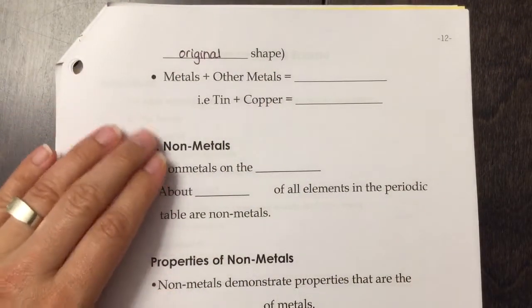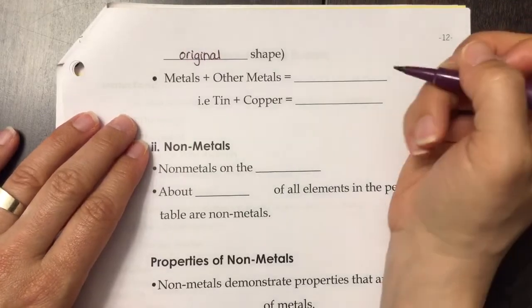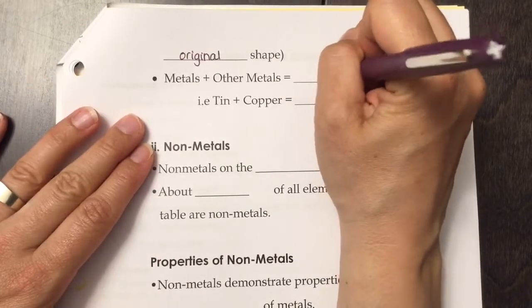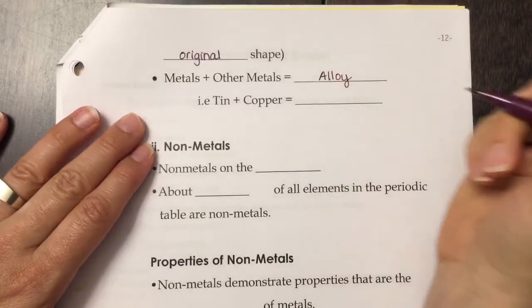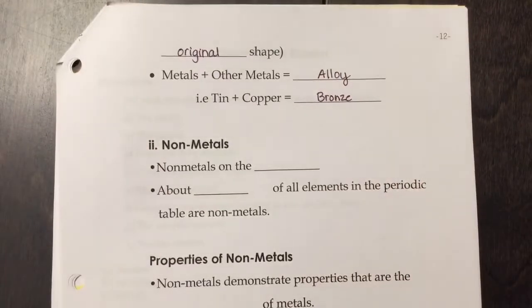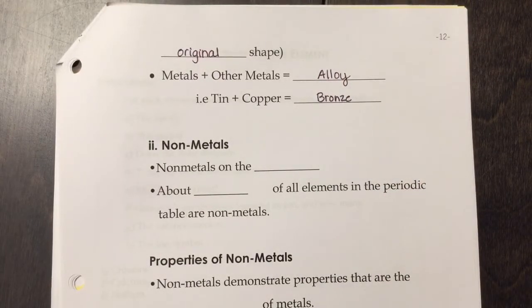Metals plus other metals - when we mix two different kinds of metals together, we get something called an alloy. An example of that is copper and tin, which together make bronze. Which makes me wonder why they use those for Olympic medals, because gold is a pure metal and silver is a pure metal. Why do they use bronze?